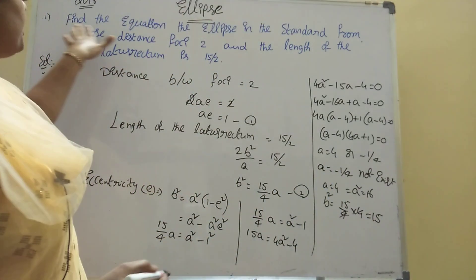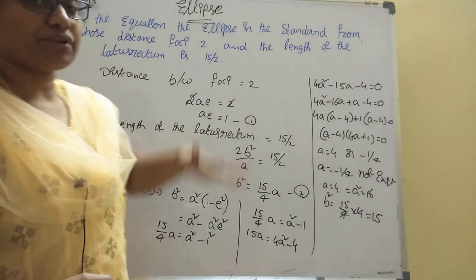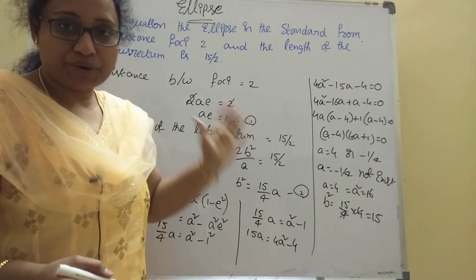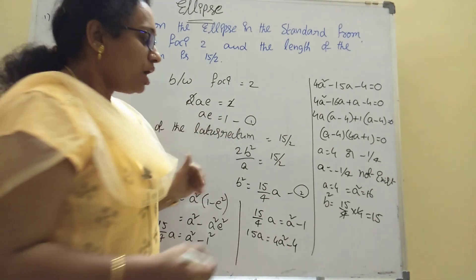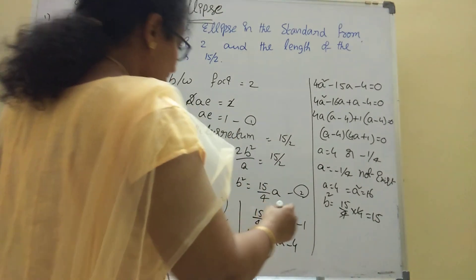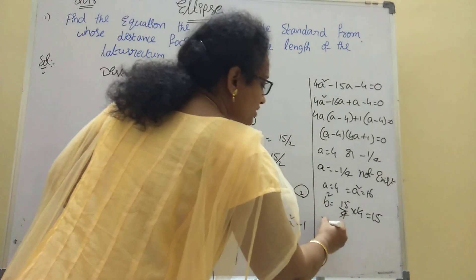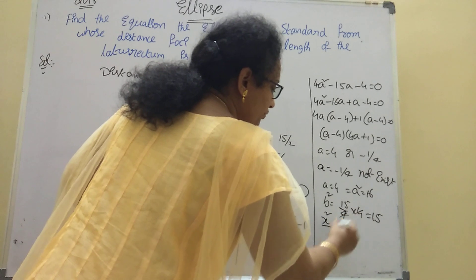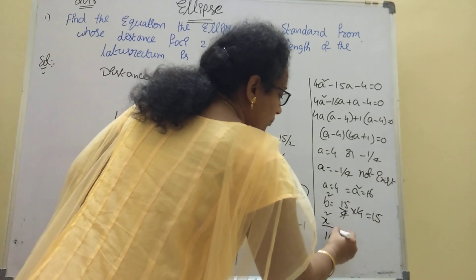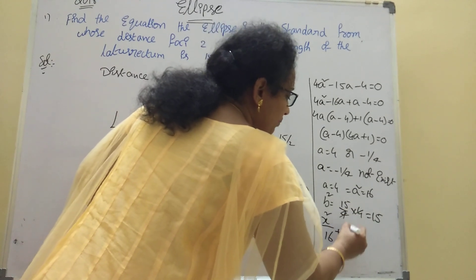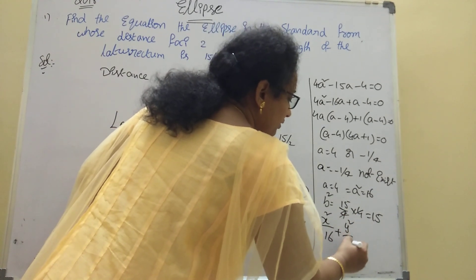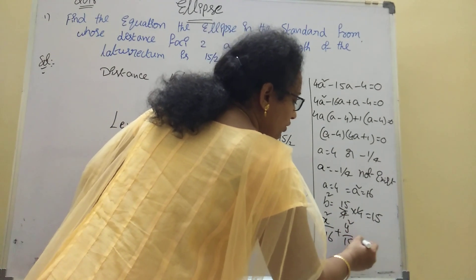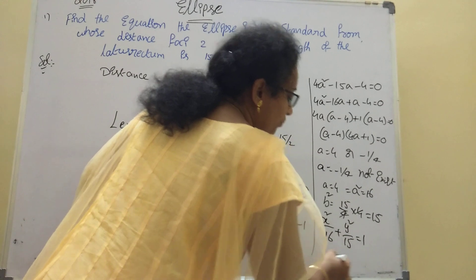Now find the equation of the ellipse. The general formula is x²/a² + y²/b² = 1. With a = 4 so a² = 16, and b² = a² − 1 = 15, the equation is x²/16 + y²/15 = 1.